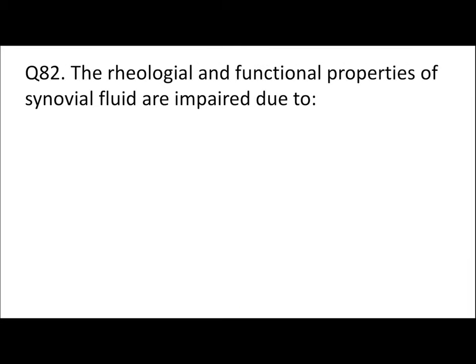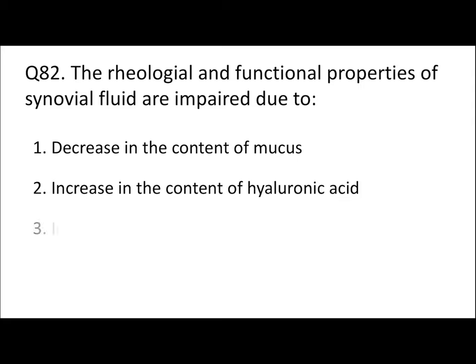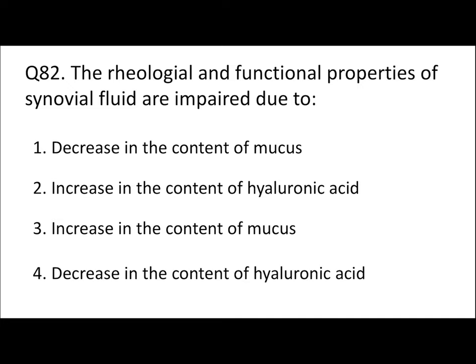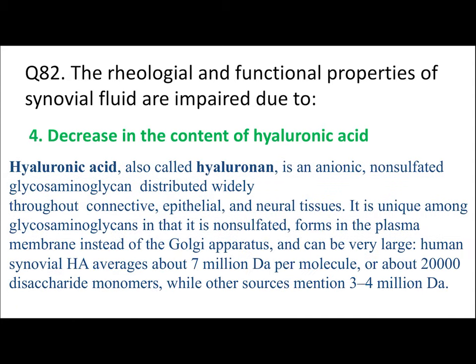Question 82: The rheological and functional properties of synovial fluid are impaired due to decrease in content of mucus, increase in content of hyaluronic acid, increase in content of mucus, or decrease in content of hyaluronic acid? The answer is that synovial fluid's properties are impaired by a decrease in hyaluronic acid content. Hyaluronic acid, also called hyaluronan, is an anionic non-sulphated glycosaminoglycan polymer. It can have disaccharide monomers with molecular weight ranging from 3 to 4 million daltons, or an average of 7 million daltons.